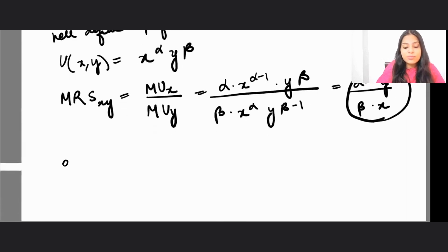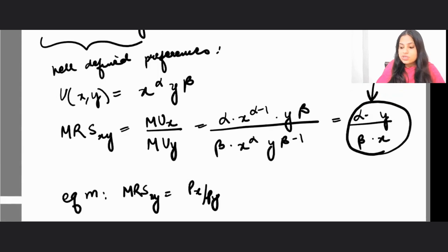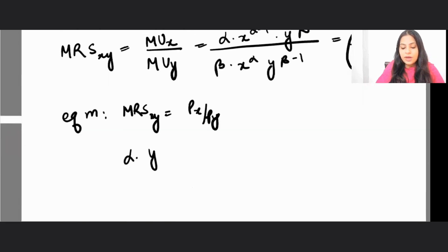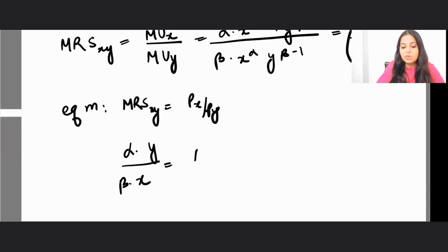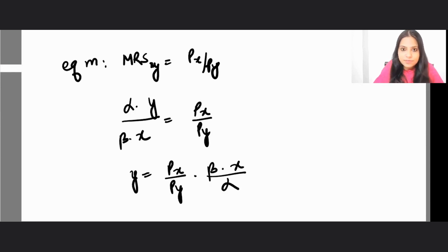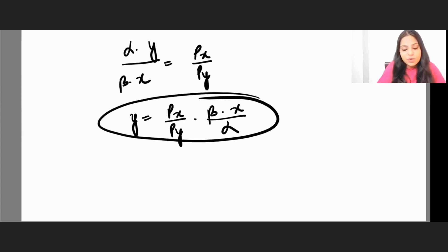Equilibrium is attained wherever MRS(x,y) = Px/Py. So we set α·y / (β·x) = Px/Py, which gives us y = (Px/Py) · (β·x / α). This is the value of y we obtain from the equilibrium condition.